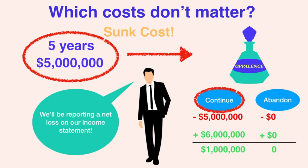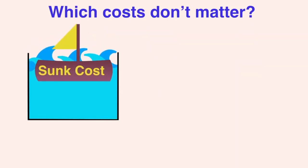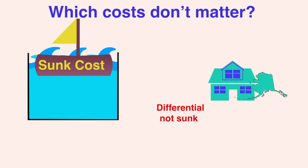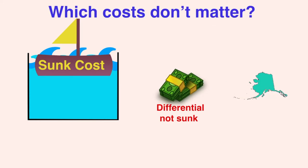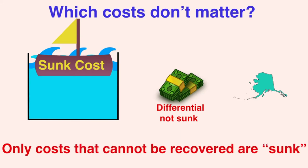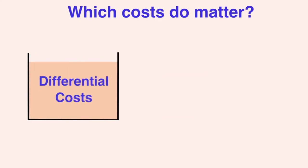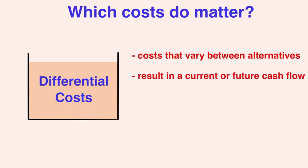Note that just because you spent money on something in the past does not make it a sunk cost. Consider the money you spend on buying a house. If years later I'm deciding whether or not to move to Alaska, the cost of my house is differential — I can factor it into my decision because I will recover this cost if I decide to move and sell my house. The recoverable cost is also known as the salvage value. Only costs that can't be recovered are considered sunk. Now let's talk about the costs that do matter: differential costs. These are the costs that vary between alternatives, and in an NPV calculation, these are the costs that result in a current or future cash flow — the antithesis of a sunk cost.